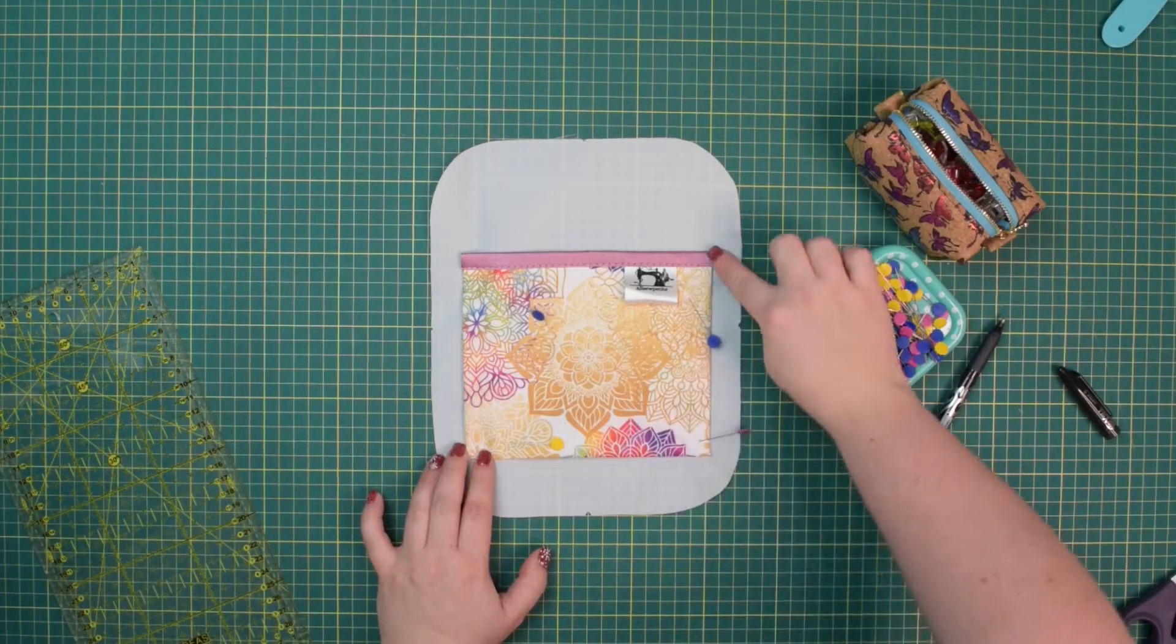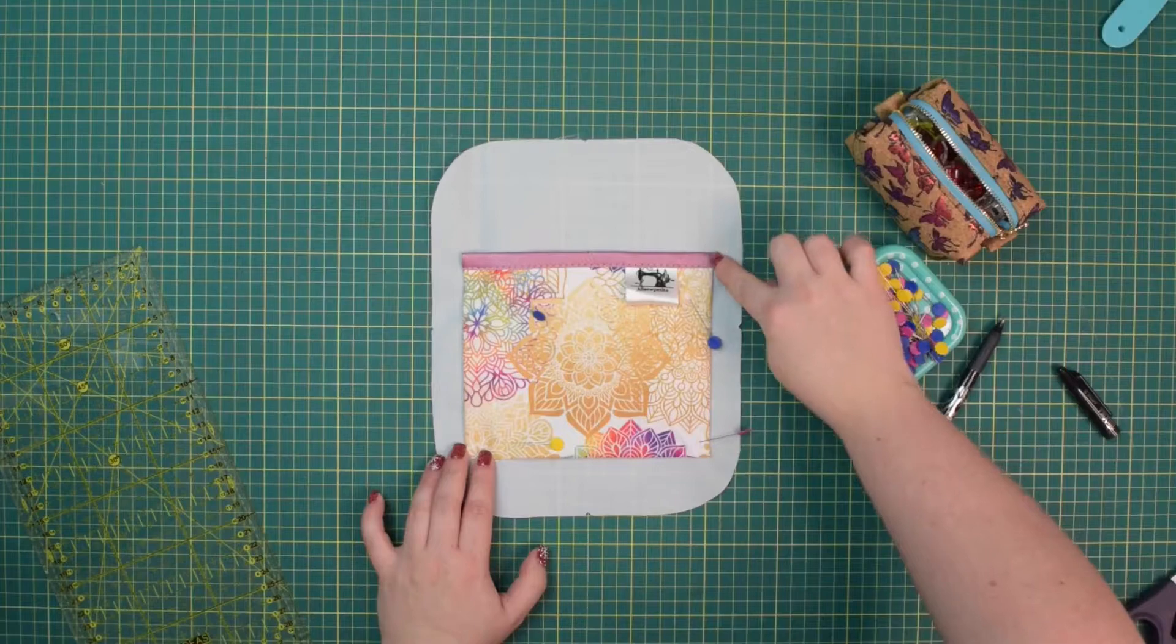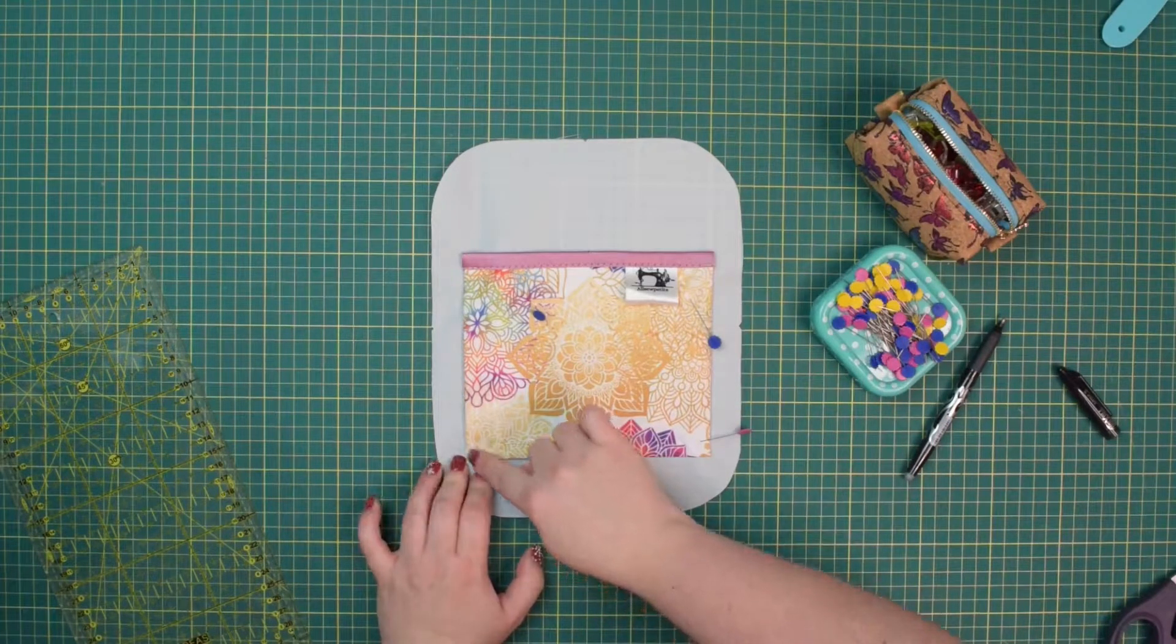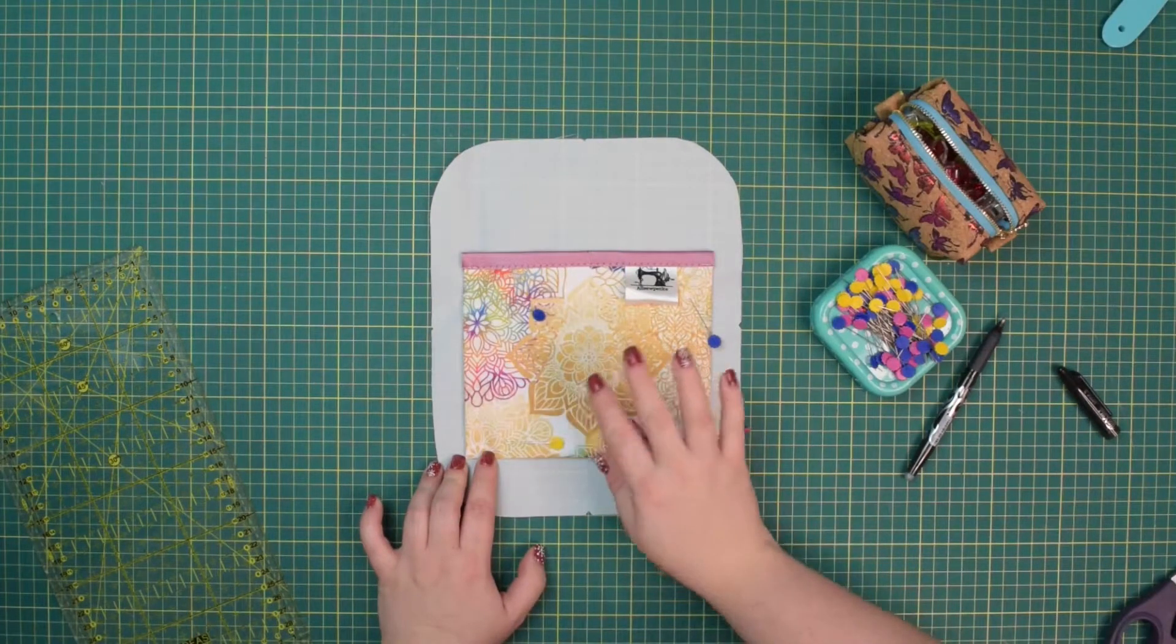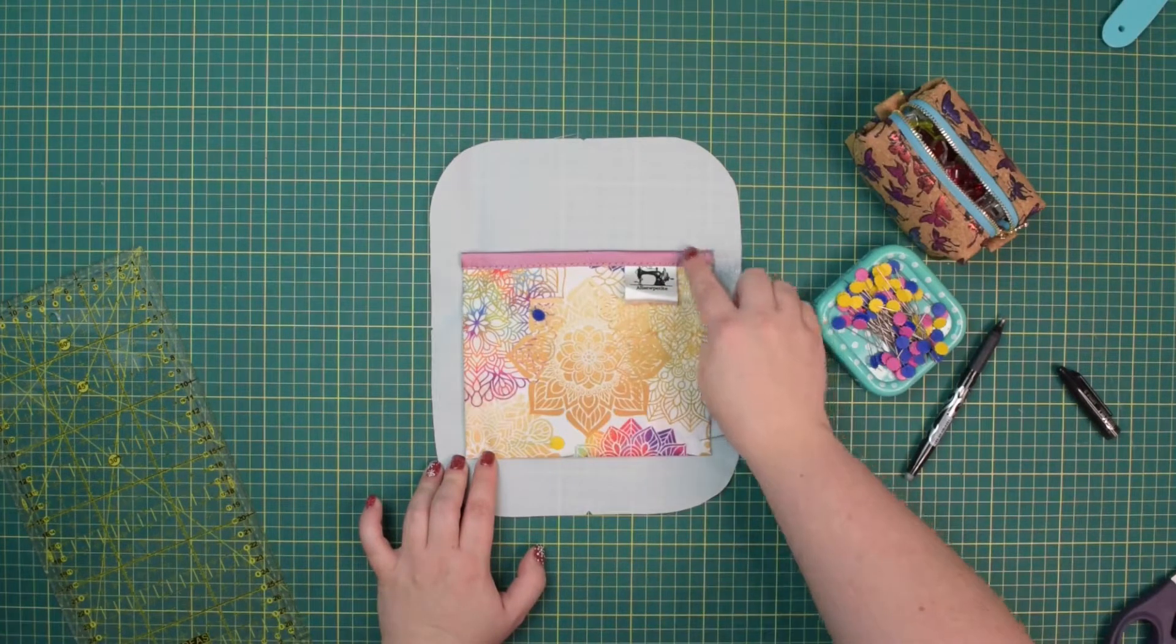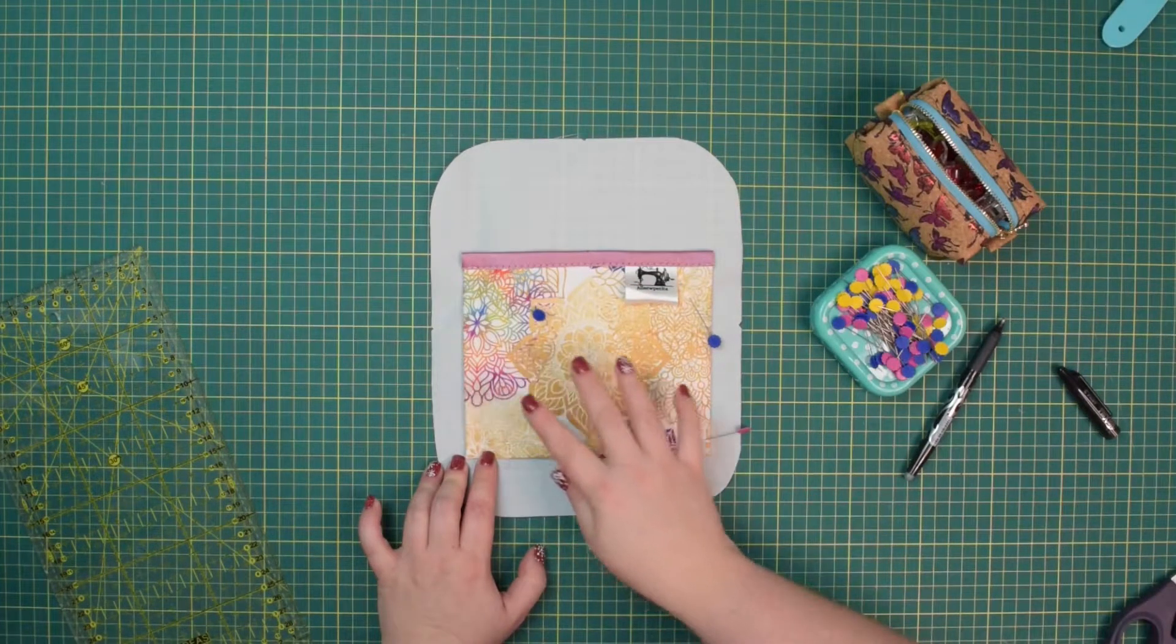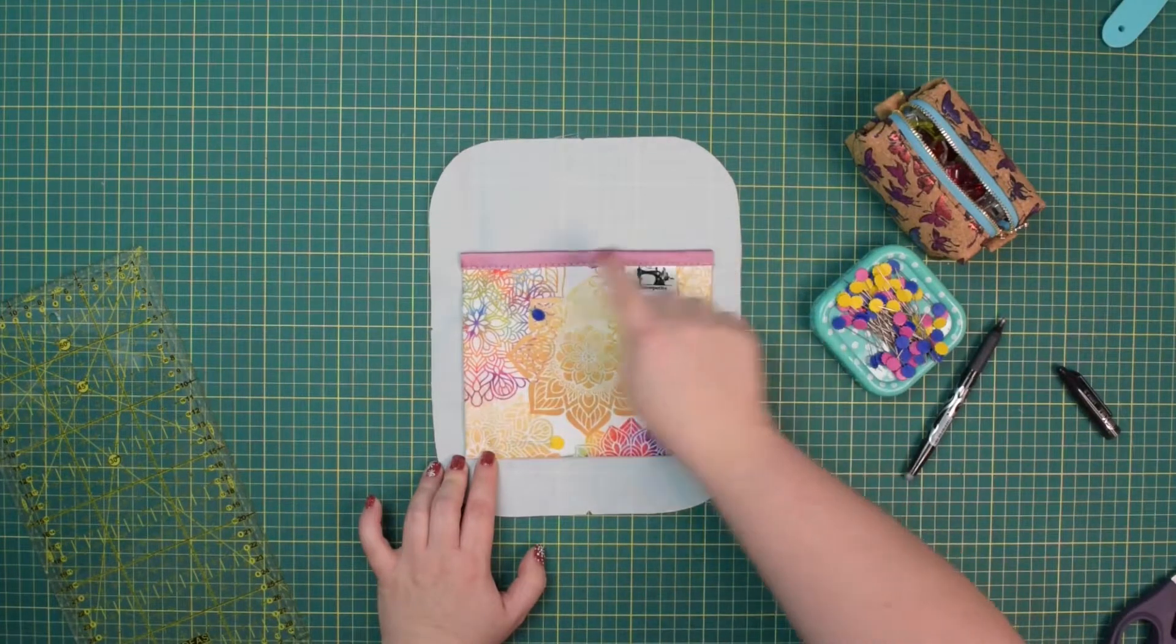I'm going to take this to the machine now and I'm going to stitch one side, pivot, stitch the bottom edge, pivot again, and then stitch the other side. If you want you can stitch little triangles at the top to anchor the pocket in place or you can install a couple of rivets here.